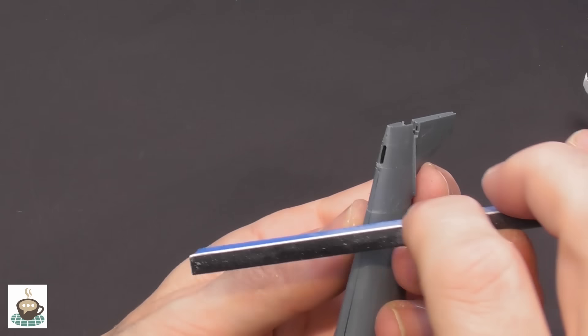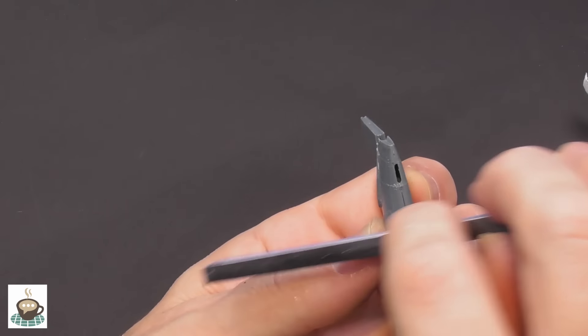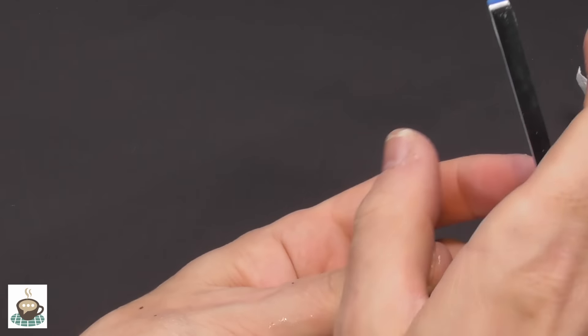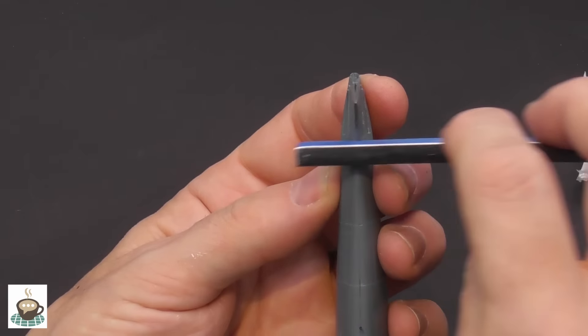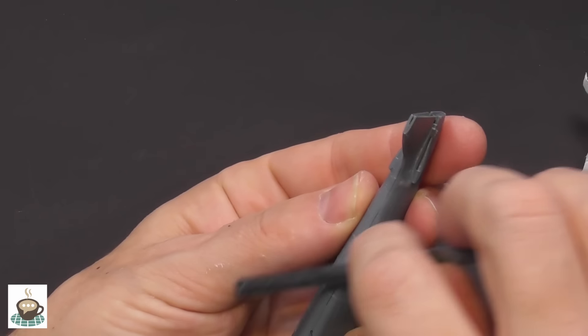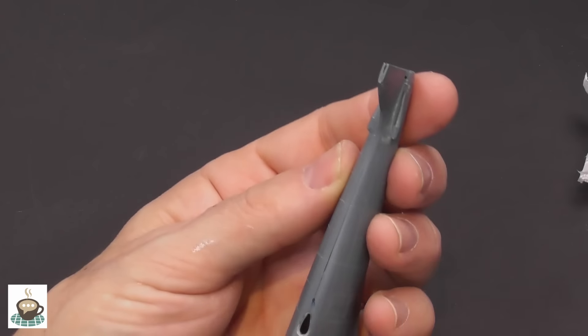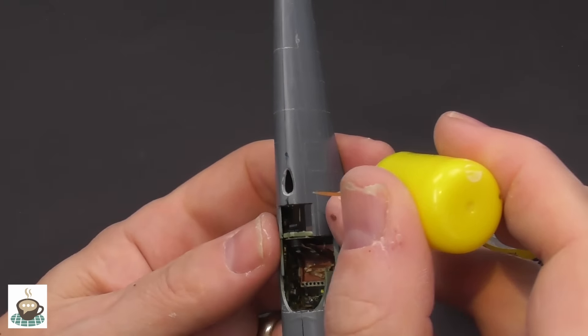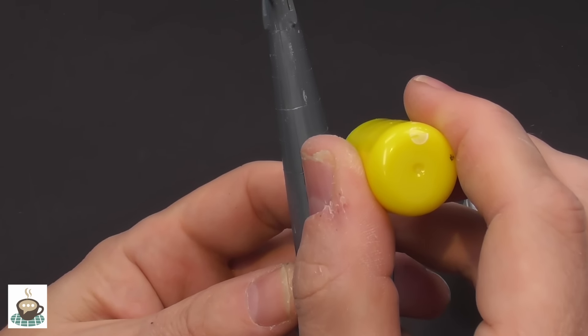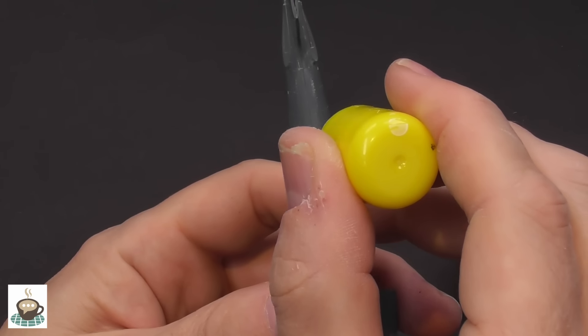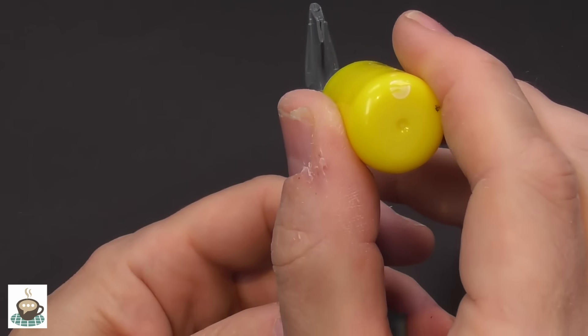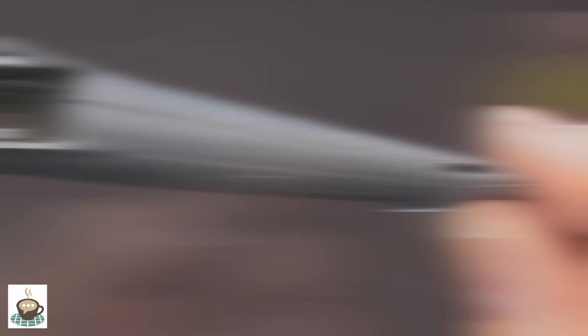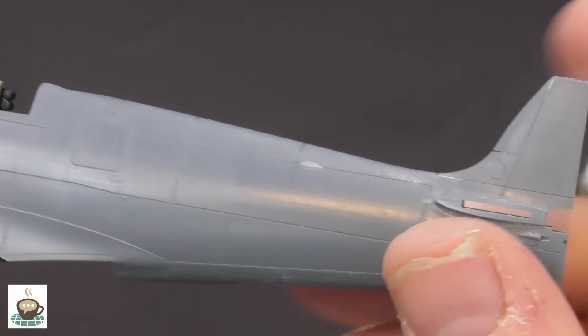Just knocking back any burrs with a sanding sponge. Again, using my finger just to feel, see if there's any raised ridges anywhere. Then we'll just go in with a bit of cement and that'll just take care of any burrs or any stubborn sanding dust. It makes the repaired panel line homogeneous with the rest of the panel lines.